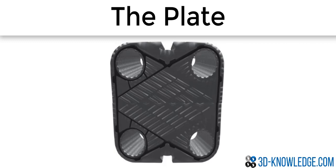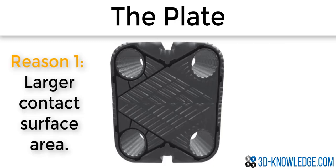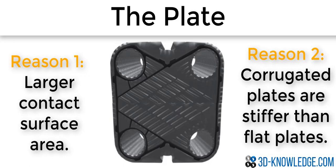You may have noticed that the plate isn't flat — it's actually corrugated. The reason for this is threefold. First, a corrugated plate gives a larger contact surface area, which increases the heat transfer rate and makes the heat exchanger more efficient. Second, a corrugated plate is actually stiffer than a flat plate, so you can manufacture a thinner plate, and a thinner plate has a higher heat transfer rate than a thicker one.